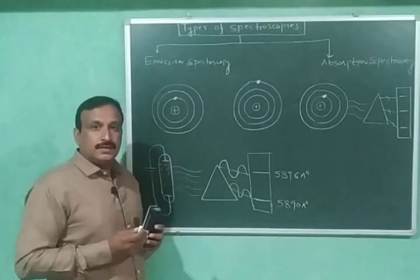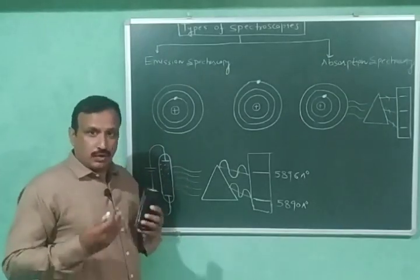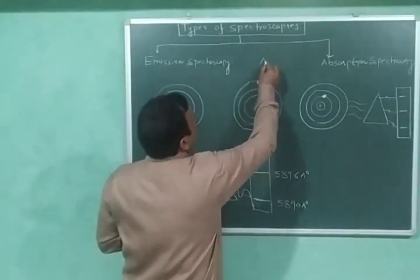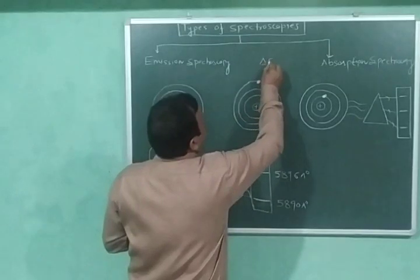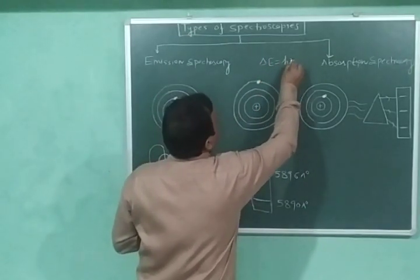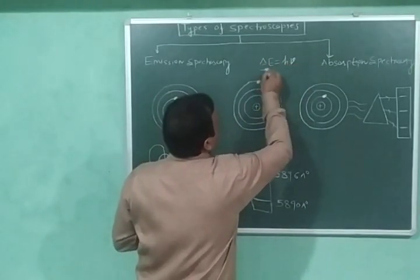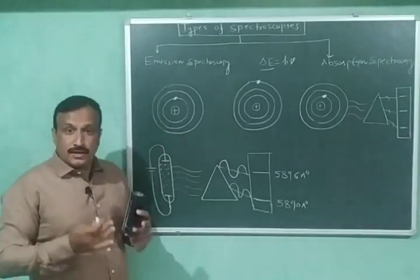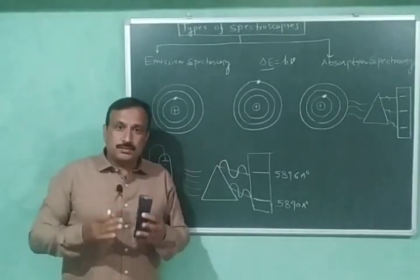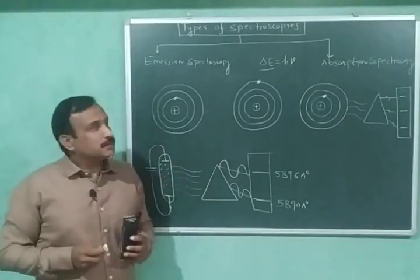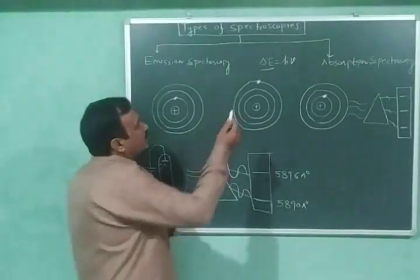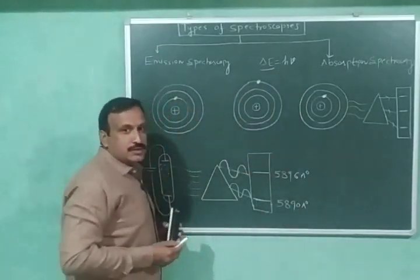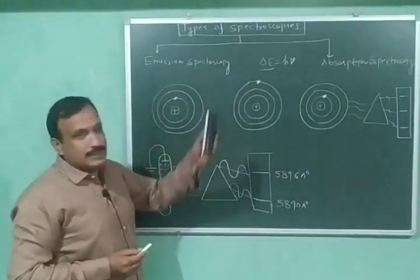is evolved or emitted or absorbed according to the relation: ΔE = hν, where ΔE is the energy difference between the two energy levels, h is Planck's constant, and ν is the frequency.